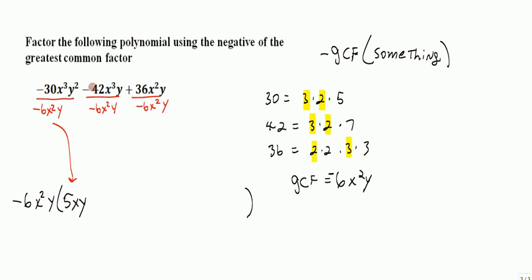Okay, now in the next term, a negative divided by a negative is positive. 42 divided by 6 is 7. x cubed over x squared is x. The y's cancel out, so they're gone. And then for the last term, right?